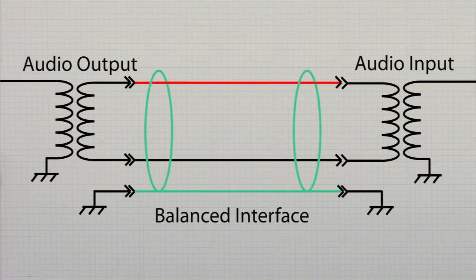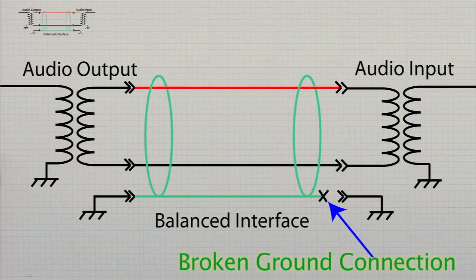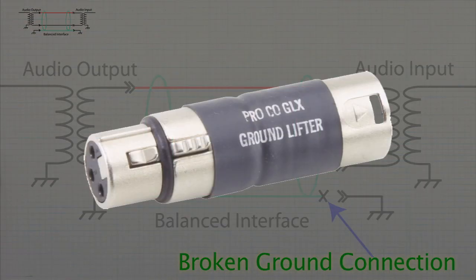Sometimes the ground carried by a balanced connection can lead to a ground loop problem with another piece of equipment because it's connected via an unbalanced cable. In this case, breaking the ground connection of the balanced line will eliminate the ground loop. To do this, you can use an adapter like this one that separates the grounds and does not connect them.